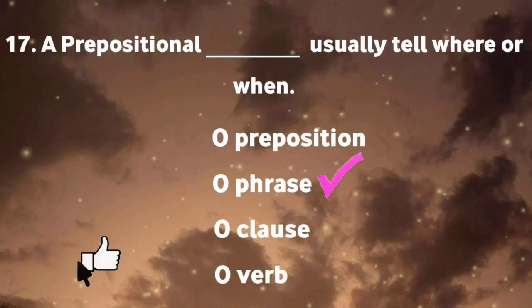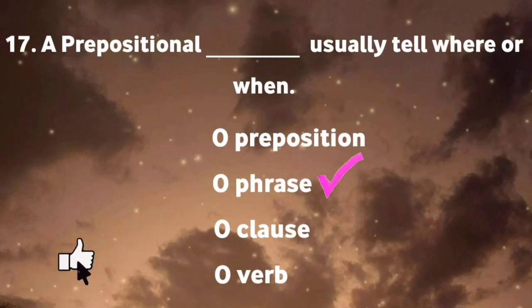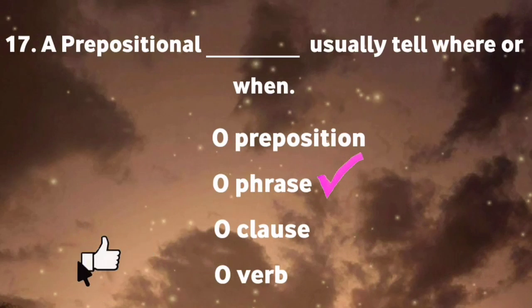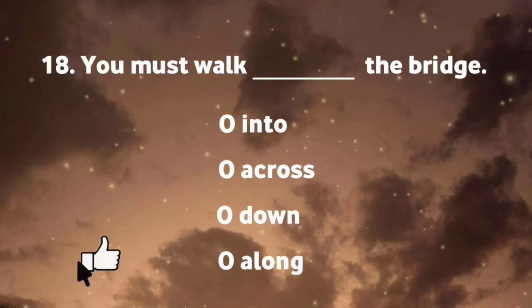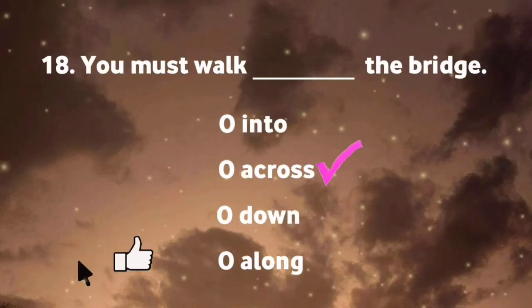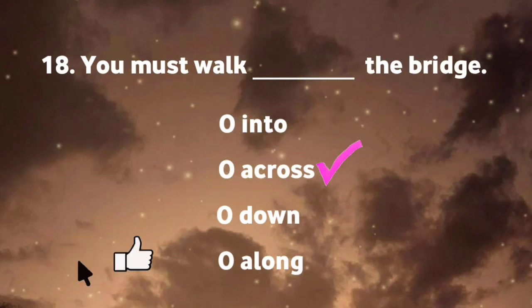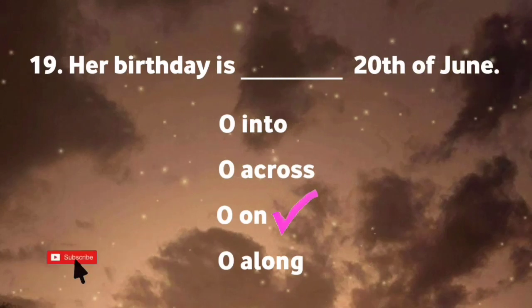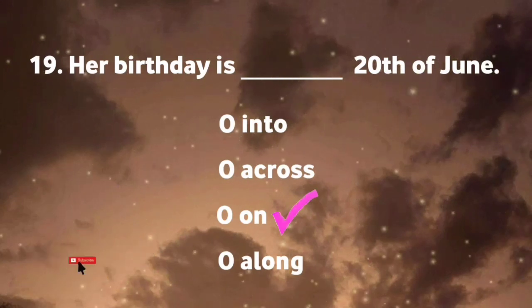A prepositional phrase usually tells where or when. You must walk across the bridge. Her birthday is on 20th of June.